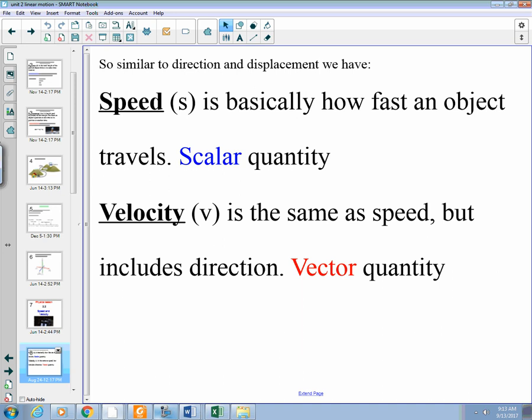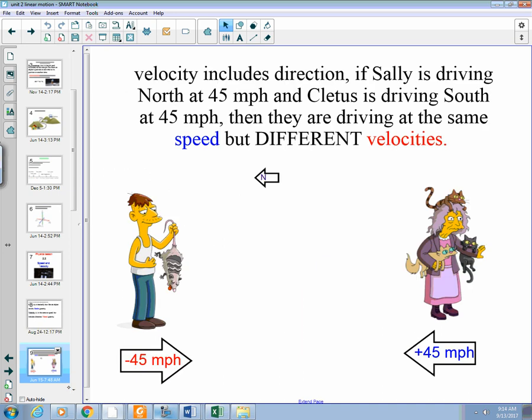So, 60 miles an hour east, west, south, falling at 9.8 meters per second down, all could be vector quantities. Okay, so let's take a look at our friends here, Cletus and Sally. I would like to take a note that north is towards Cletus.